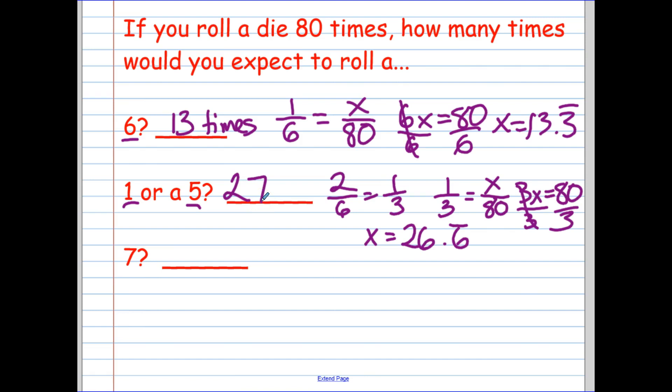Okay. Probability of getting a 7. Are there any 7's on a die? Not last time I checked. So that gives us a probability of 0 out of 6 equals x over 80. And if you cross multiply, that gives us 6x equals 0. 0 divided by 6, guess what is 0? And that makes sense. Doesn't matter how many times. I could roll that die a million times. I'm never going to get a 7.